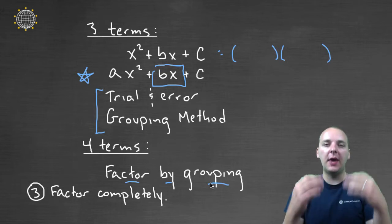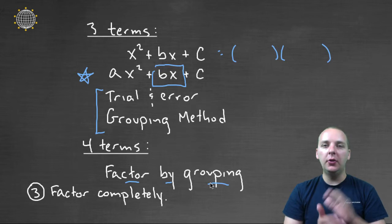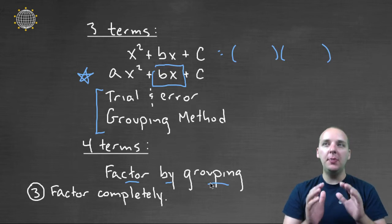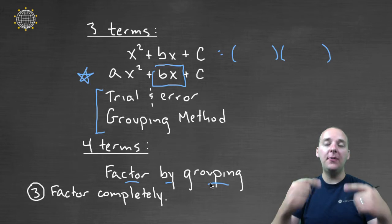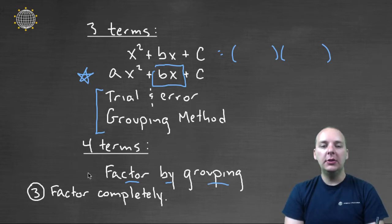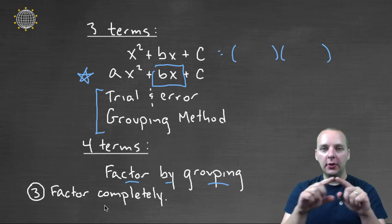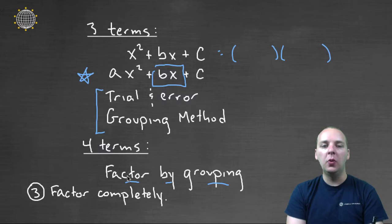Once you've done that, once you've factored it, don't quit on it. Don't give up on it. It's very possible that your factored answer might factor some more. So make sure each of your individual polynomials in your factorization are completely factored where they can't be factored anymore. And so that's our general strategy.